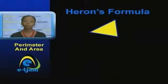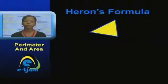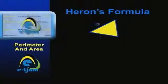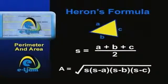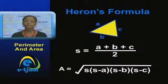In some cases, the height of a triangle is not readily identified. In such cases, we use Heron's formula, also known as the semi-perimeter formula. Please note that A, B, and C in the formula represent the sides of the triangle and S is the semi-perimeter.